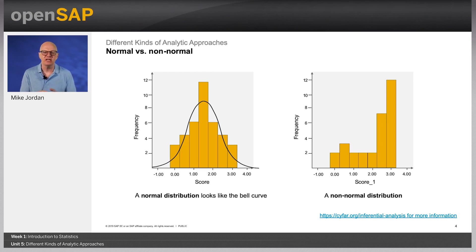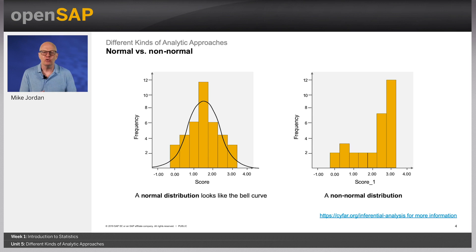On the right, you will see non-normal distribution. There are several ways a distribution can be non-normal, and you'll learn a little bit more about these later in the course. This can happen with a small sample size or an unusual set of responses, for example. Usually, if the data is non-normal, you will choose from statistical tests called non-parametric tests.